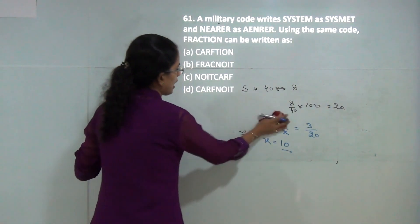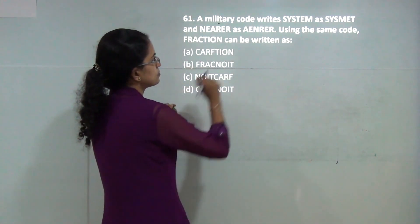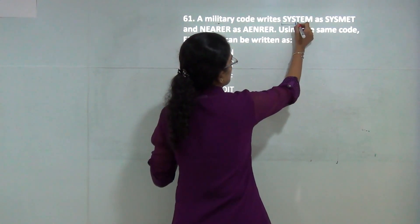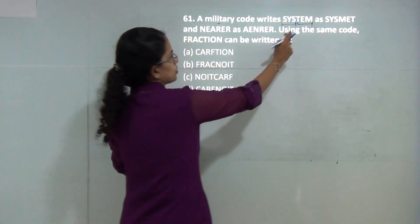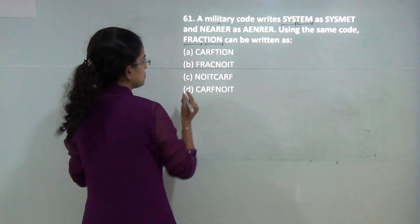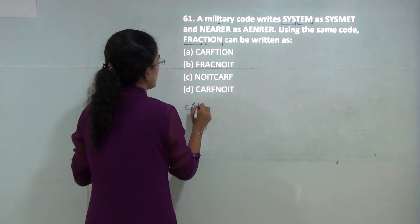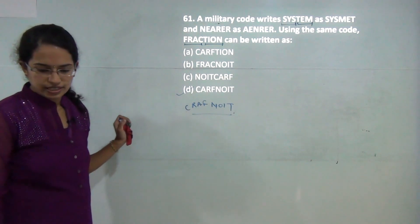Next is a coding-decoding problem. Break the code into sets of 2 and reverse them. TEM becomes MAT. FRAC and CHUN reversed become CRAF and NOIT. So D is the correct answer.